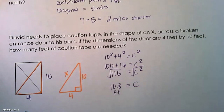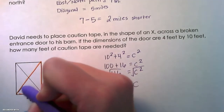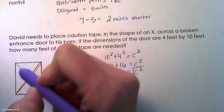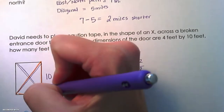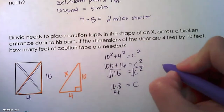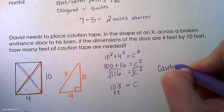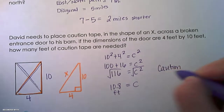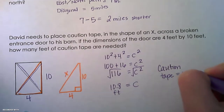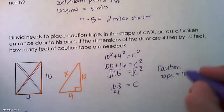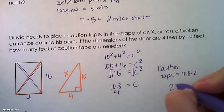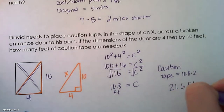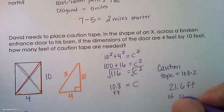How many pieces of caution tape does he need? He needs one for this diagonal and one for this diagonal, so we need to double our amount. The caution tape would be 10.8 times two, which gives us 21.6 feet of caution tape.